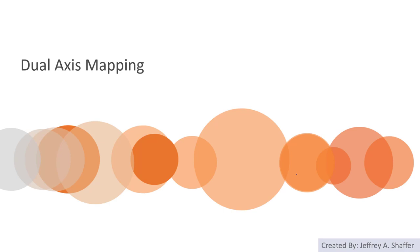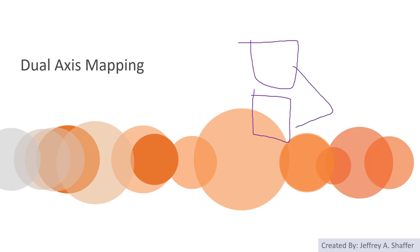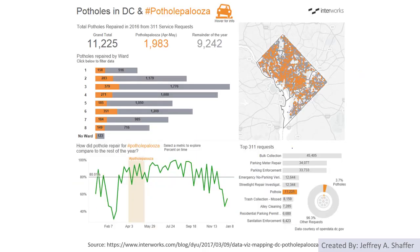Another very nice feature is called dual-axis mapping. We have already created dual-axis charts and visualizations. Dual-axis mapping allows you to combine map symbols from two layers into one map, which is extremely useful when you want to compare different features at the same locations. Here is one example of a dual-axis map.